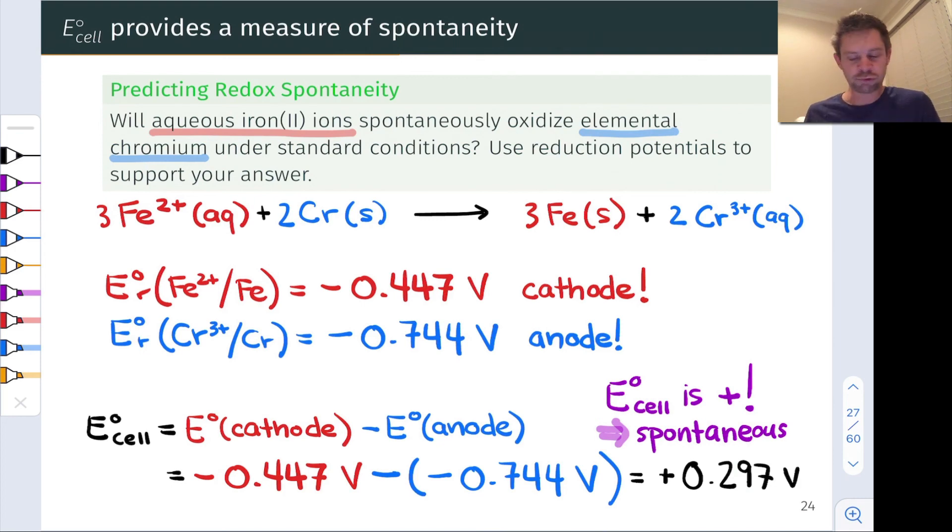So this is a great example of applying cell potentials to get some thermodynamic information about a redox reaction. Namely, whether it's spontaneous as written or not. There's a deep connection to free energy here. In the next section, we're going to connect free energy to the cell potential, as well as chemical equilibrium, and bring electrochemistry, thermodynamics, and chemical equilibrium all together.